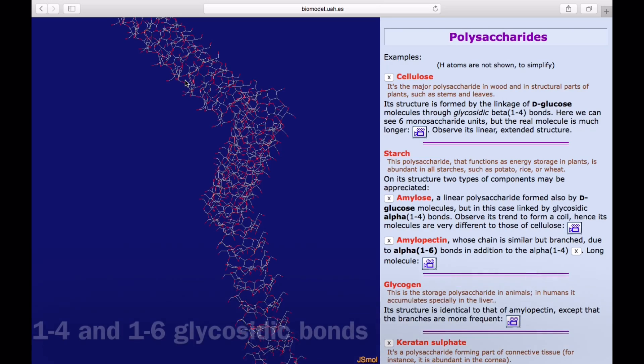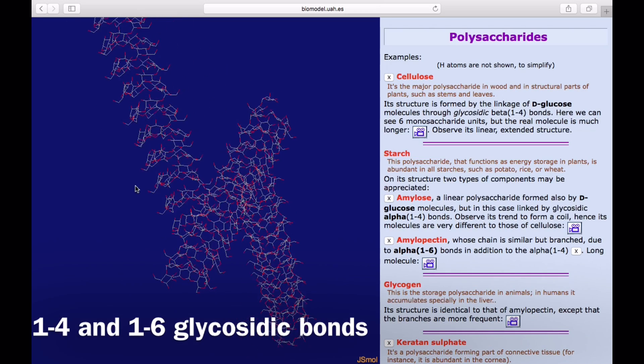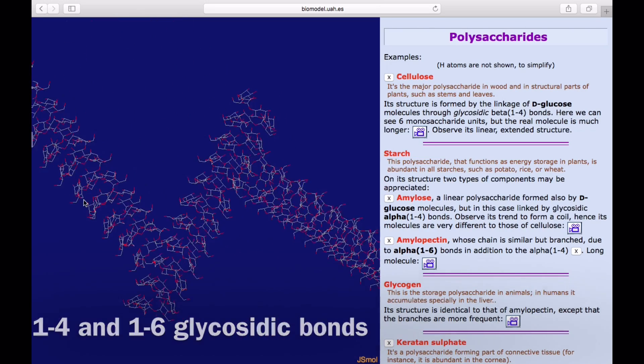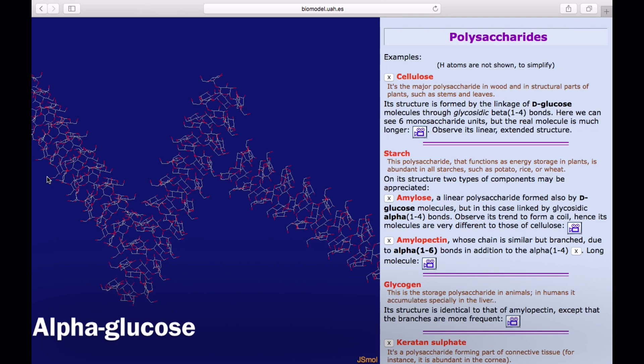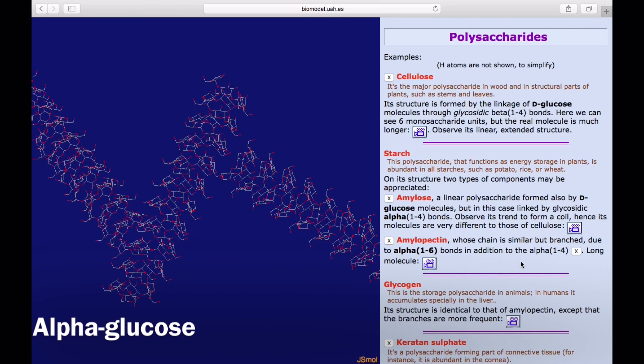This is as a result of having both 1-4 and 1-6 glycosidic bonds. However, like amylose, amylopectin also contains alpha-glucose.